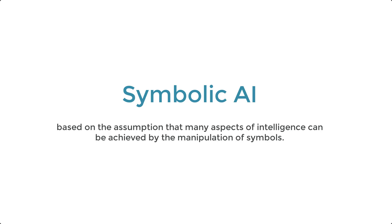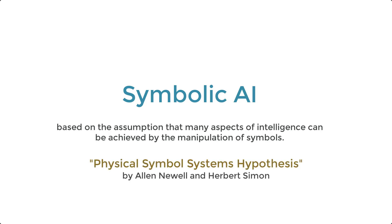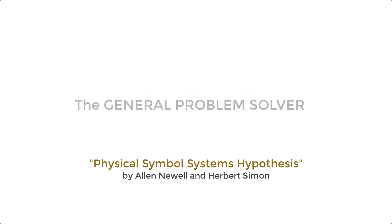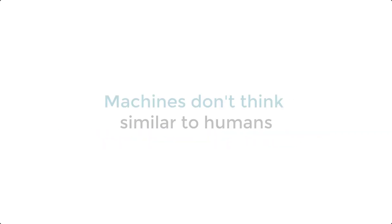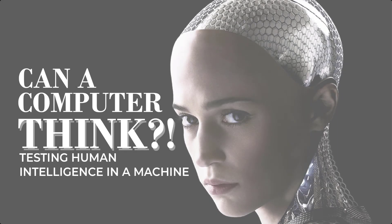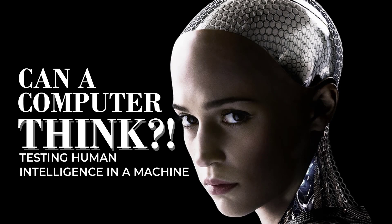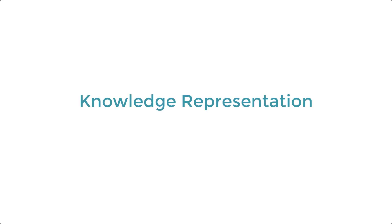This assumption is defined as the physical symbol systems hypothesis by Alan Newell and Herbert Simon in the mid-1960s, exhibited by their computer program called the General Problem Solver. It was the first computer program which separated its knowledge of problems — rules represented as input data — from its strategy of how to solve problems, a generic solver engine. Machines don't think like humans do, but for it to simulate thinking, it needs a way to represent and manipulate knowledge, one way being in the form of rules.